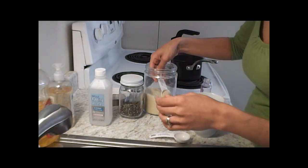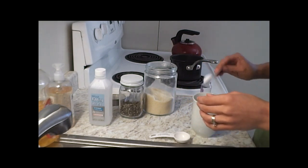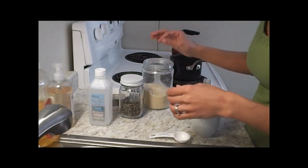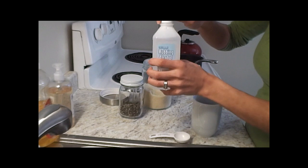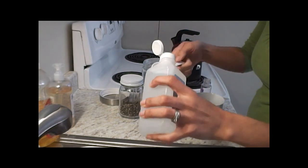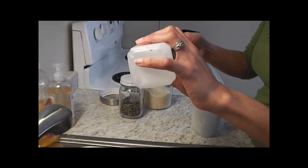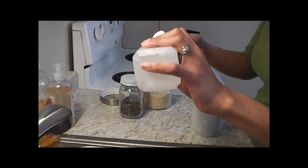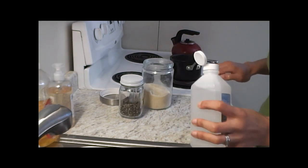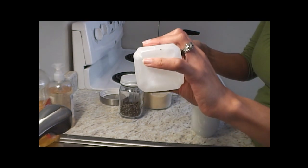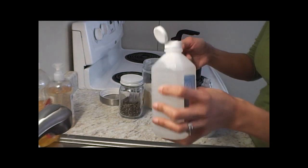Two teaspoons of sugar and then two tablespoons of rubbing alcohol. It seems like a lot, but after about a couple hours you really don't smell the alcohol at all in the hairspray. But you're gonna need this or else it's gonna go bad.